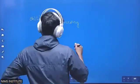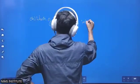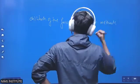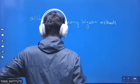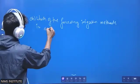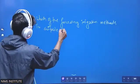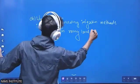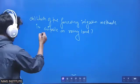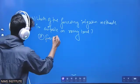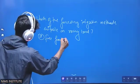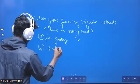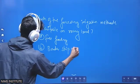Which of the flowing irrigation methods is suitable on rolling land? Option A: Free flooding. Option B: Border strip method.